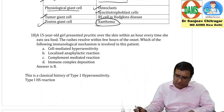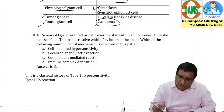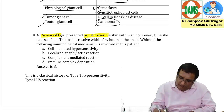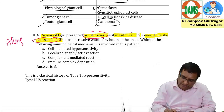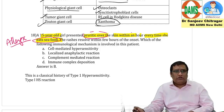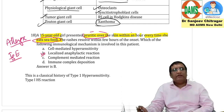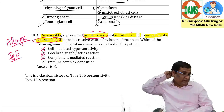Next question: which immunological mechanism is involved? Options: cell mediated, localized anaphylactic reaction, complement mediated, immune complex. A 15-year-old girl presents with pruritic rash over skin every time she eats seafood. This is an allergic reaction. She hasn't developed hypotension, so we call it a localized anaphylactic reaction, which is IgE mediated — a type one hypersensitivity reaction. Not cell mediated, not complement mediated.